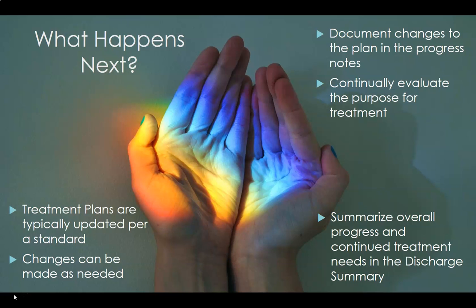Now that we have completed the assessment and treatment plans, what happens next? Treatment plans typically have a review date, determined by the setting and facility. In general, treatment plans should be a fluid document that changes as the client meets his or her goals or as additional items become evident as treatment needs. Progress towards goals is documented in the treatment notes. If a note indicates a client has achieved a goal, then the note should also indicate the new treatment goal or plans for discharge if the client is ready. When the client is ready for discharge, write a discharge summary note that highlights the treatment received, the client's progress towards goals, and recommendations for continued participation after discharge.